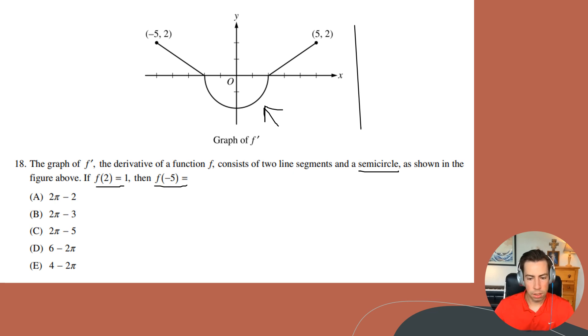So the first thing we can do here is use the Fundamental Theorem of Calculus and recognize that the integral from negative five to two of f prime of x dx is just going to be equal to f of x evaluated from negative five to two. And again, it's f of x because it's just the antiderivative of f prime of x, so this is going to be equal to f of two